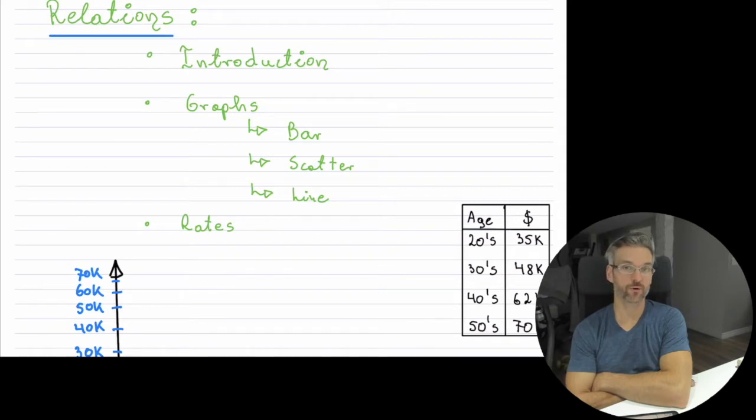as you're growing up, and let's say maybe the amount of money that you make. You can see a little table on the right-hand side. In your 20s, 30s, 40s and 50s, you can see 35, the K stands for 1,000, and your salary maybe is going up. So you can have a relationship between two different variables, okay?